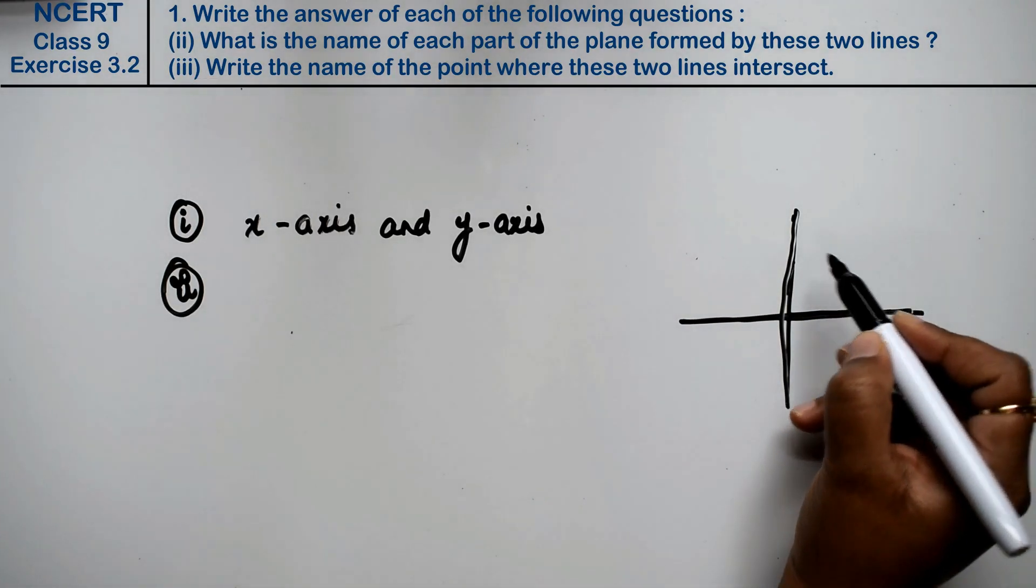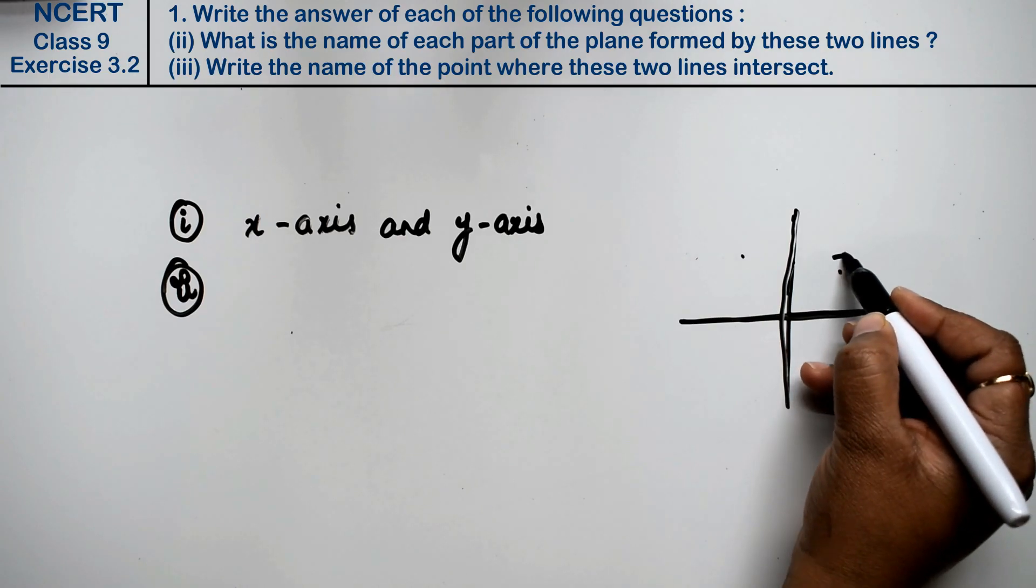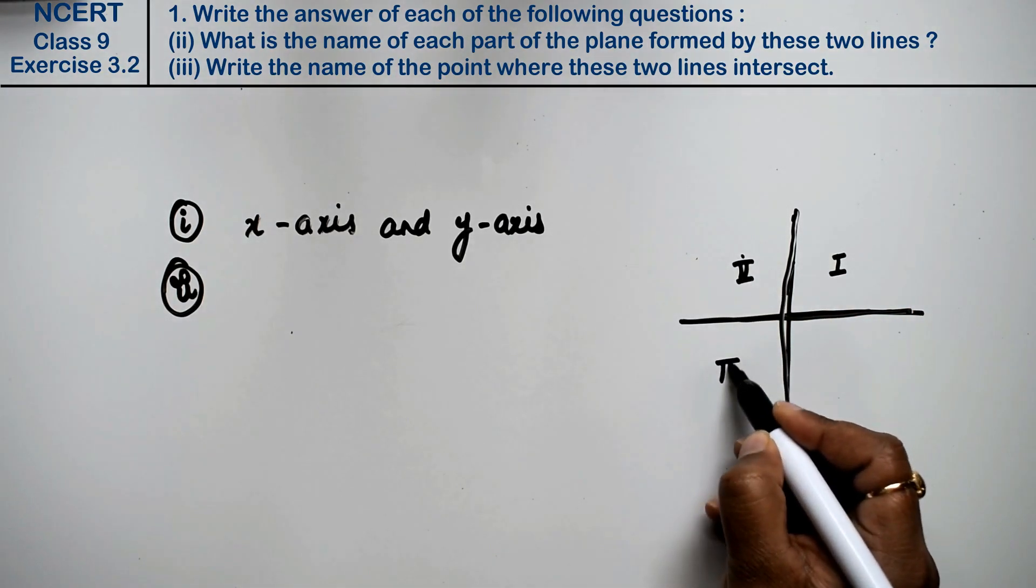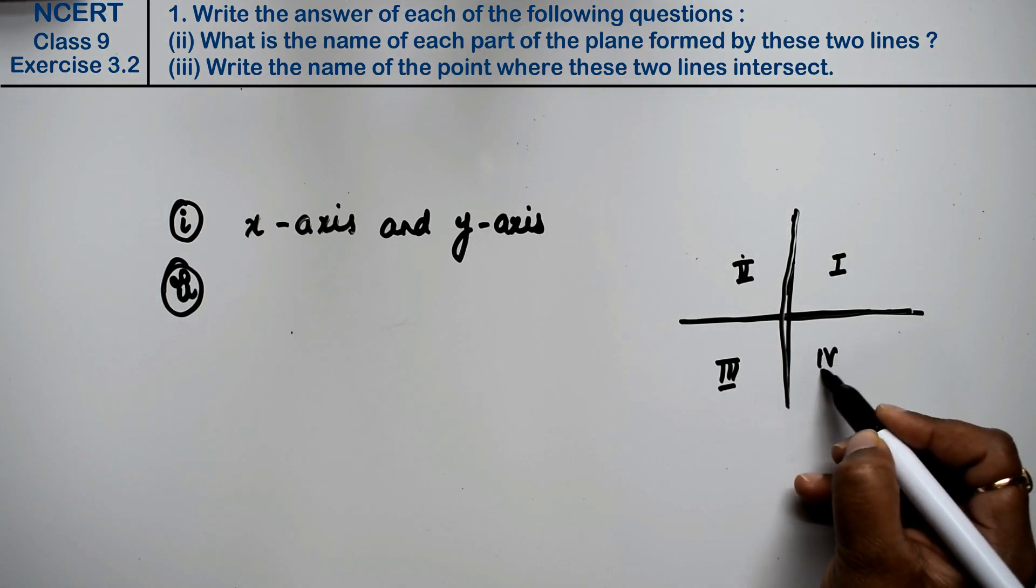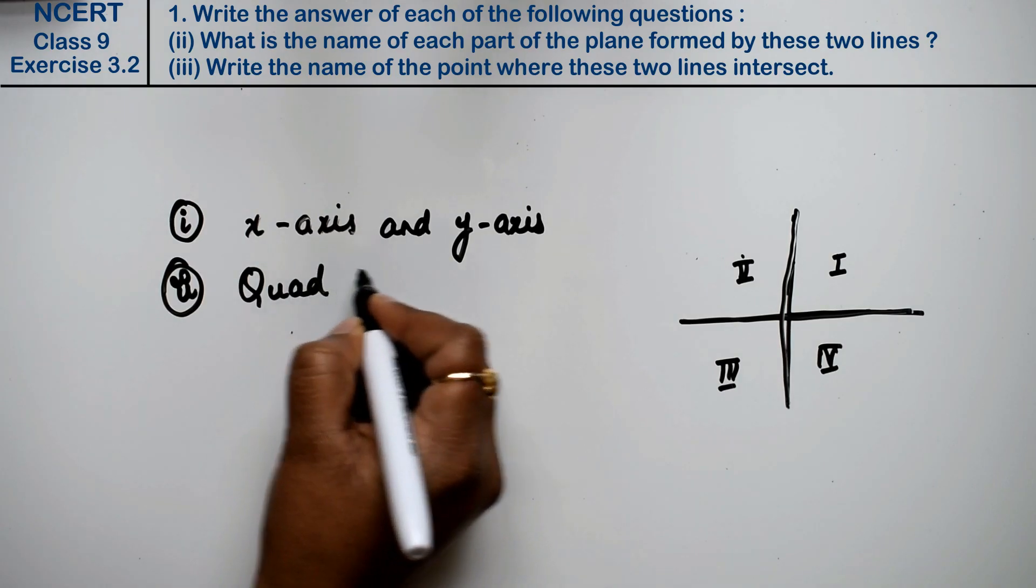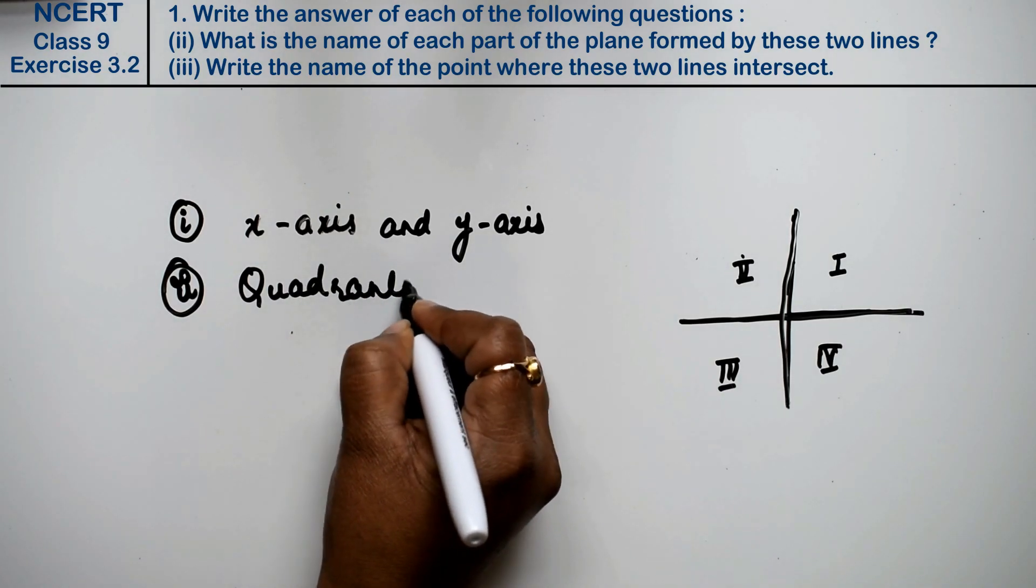These are called the quadrants. I had told you, this is the first quadrant, this is the second quadrant, this is the third quadrant, and this is the fourth quadrant. These are called quadrants, right friends?